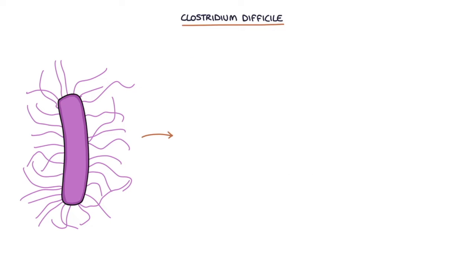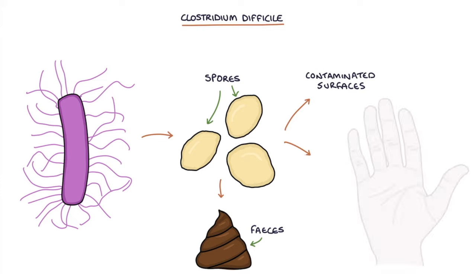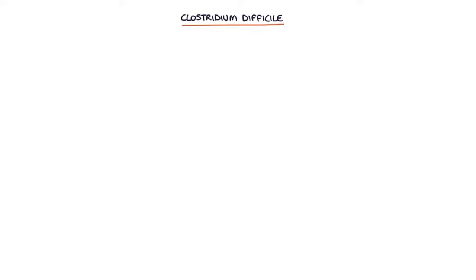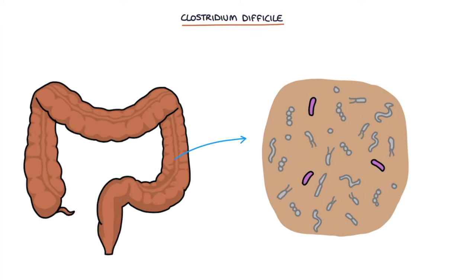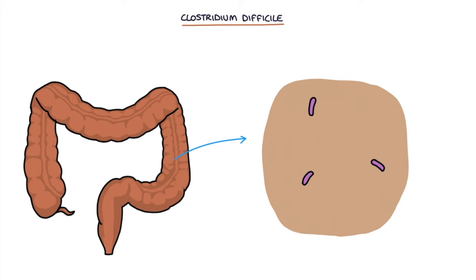C. difficile produces spores which are released in the feces, and these spores can survive on contaminated surfaces and hands, helping to spread the bacteria to others. It can colonize the intestines without causing any symptoms or any issues, and then when antibiotics interrupt the normal intestinal microbiome, C. difficile can proliferate and get out of control.